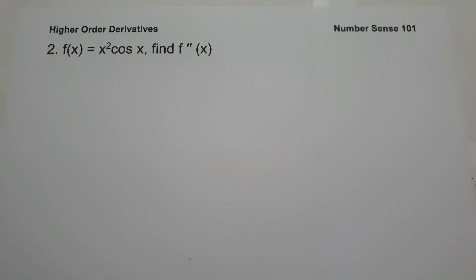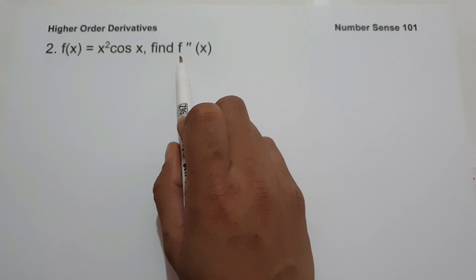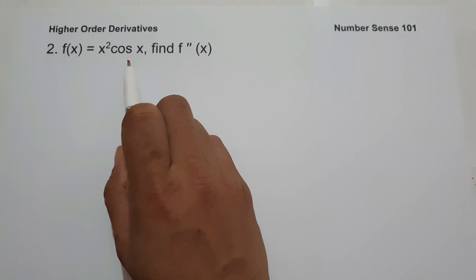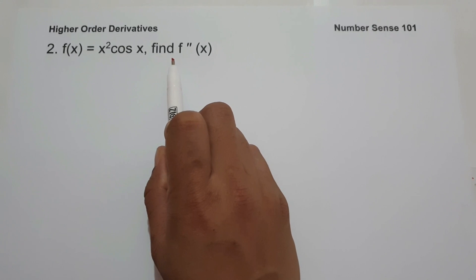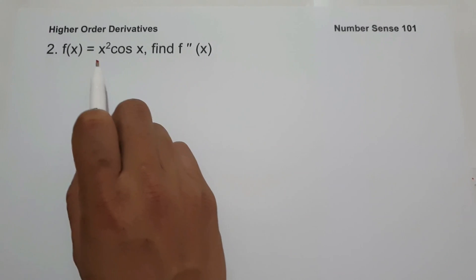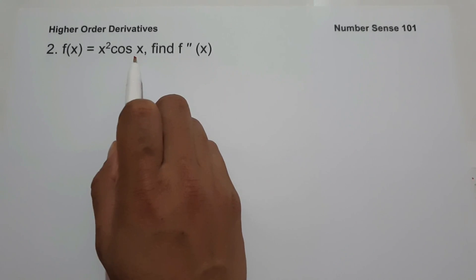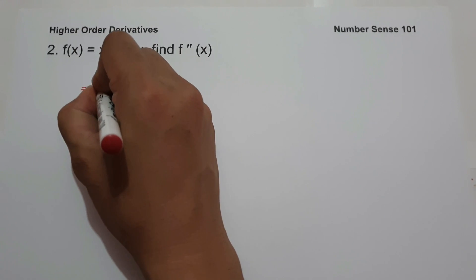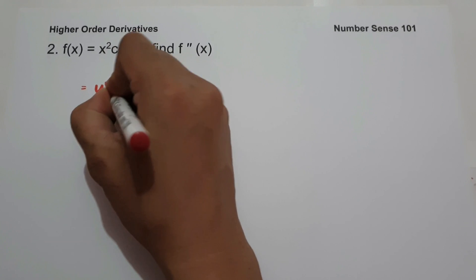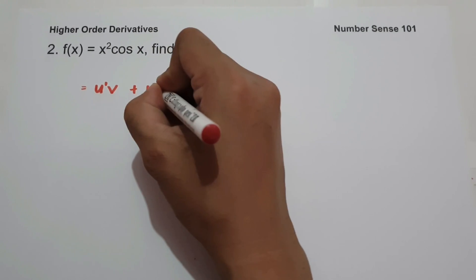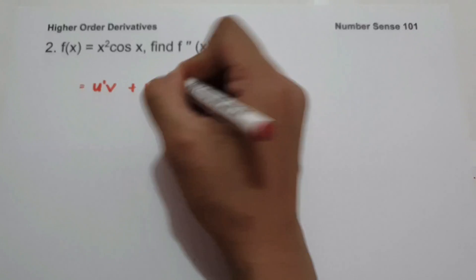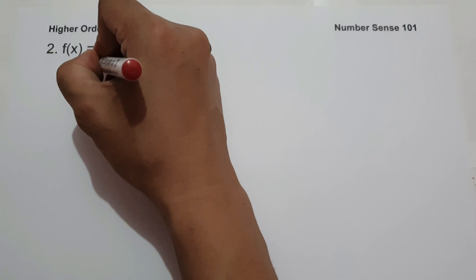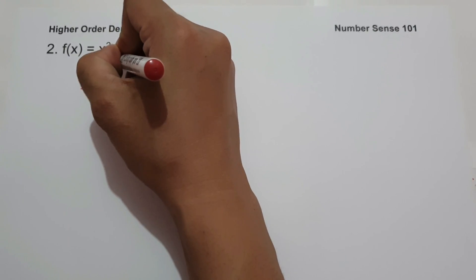On number 2, f of x equals x squared times cosine x, and we are going to find the second derivative of the given function. Since we have a product of x squared and cosine x, we are going to use the product rule, which is u prime times v plus u times v prime.